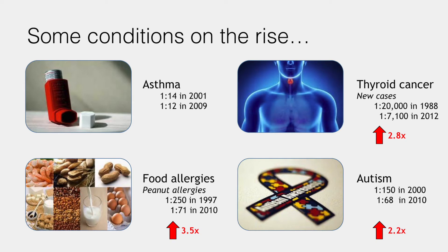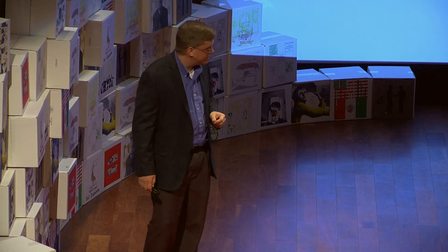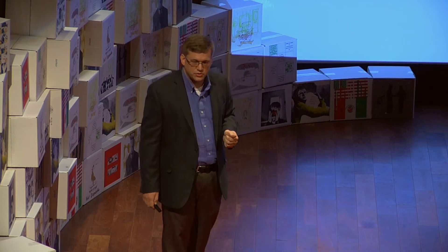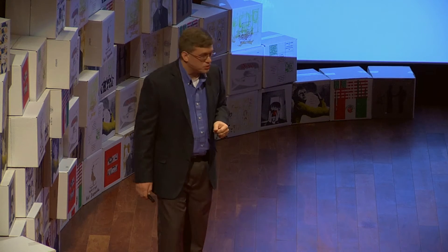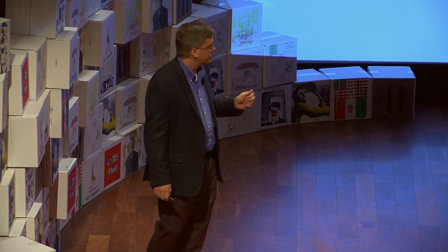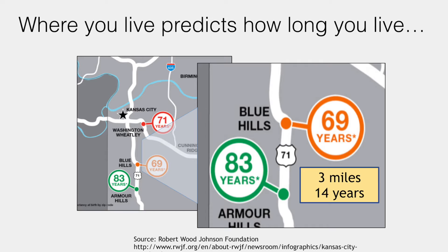This is a very troubling study from the Robert Wood Johnson Foundation, with data specific to Kansas City. Highway 71 is just 2 or 3 miles away from here. People who live in the Armor Hills neighborhood have an average lifespan of 83 years. People who live in the Blue Hills area have an average lifespan of 69 years — three miles and a 14-year difference in lifespan.